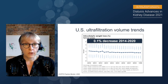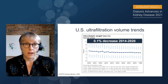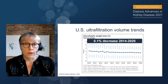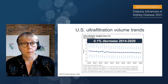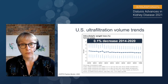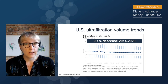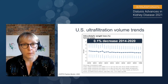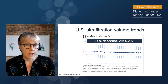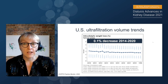The question is, how have we lowered ultrafiltration rates? We can do so by either increasing dialysis treatment time or reducing the amount of fluid we remove. When we look at treatment times during this period, there's been only a 3.7-minute or 1.7% increase — not enough to account for the decrease in UF rates. And ultrafiltration volumes expressed as a percent of body weight show only about a 0.1% decrease from 2014 to 2020.